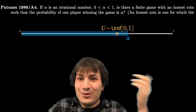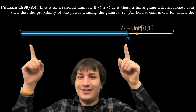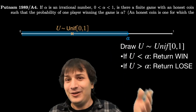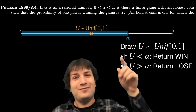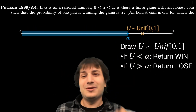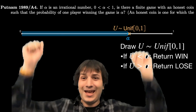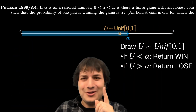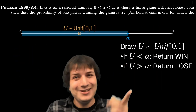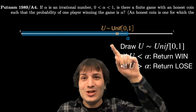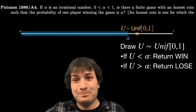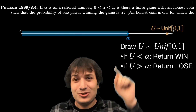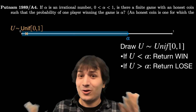What was the problem? We had to make an event of probability alpha — and we just did it. The game is: if u is less than alpha, you win; if u is bigger than alpha, you lose. You'll have an alpha probability of winning. The problem, though, is the question said to use fair coin flips, and I didn't — I used a uniform random variable. But you can make a uniform random variable out of fair coin flips, and that's the secret to the problem.